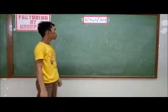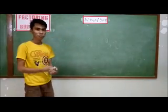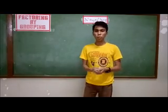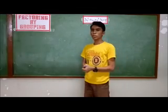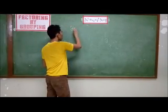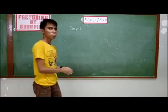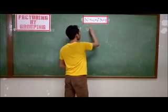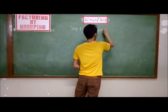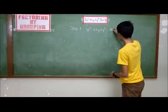For the third example, we have 3x squared minus 4xy plus y squared minus 3x plus y. As we can see, there are 5 terms in this expression. In grouping terms, it could be a trinomial and a binomial. So in step 1, we can group the first, second, and third terms together because they can be simplified to give 3x squared minus 4xy plus y squared. The fourth and fifth terms can be grouped together to give negative 3x plus y.